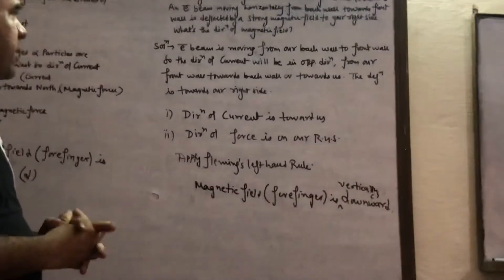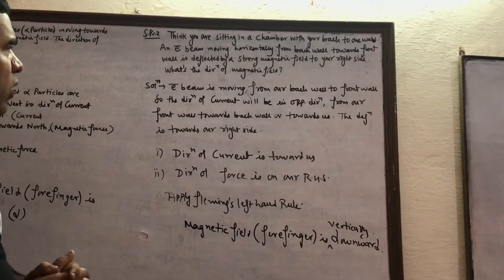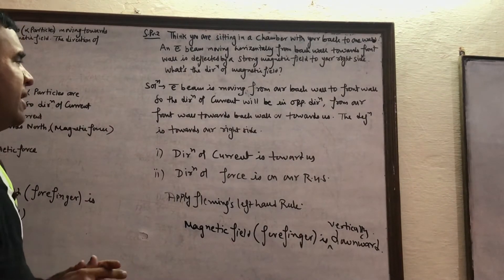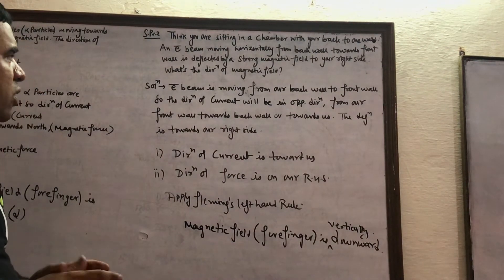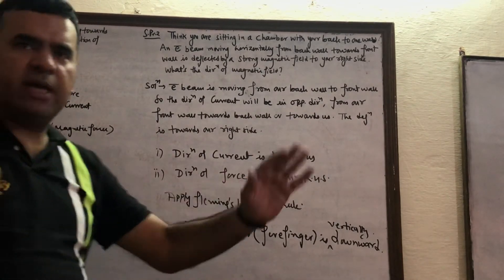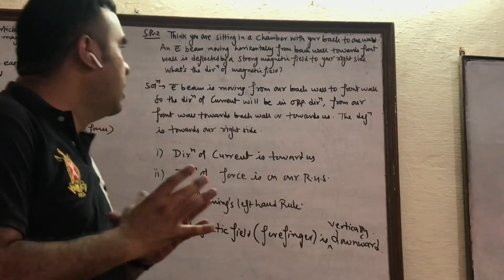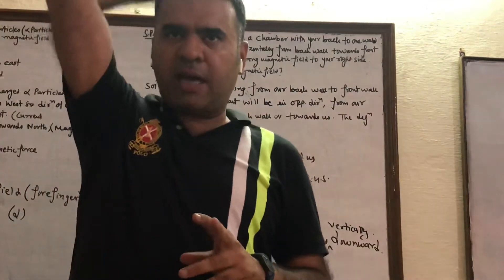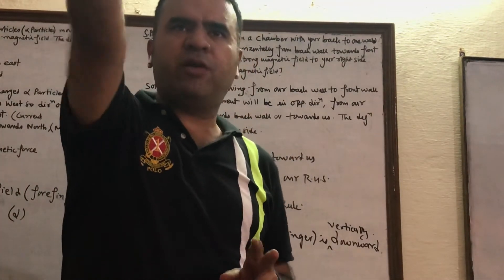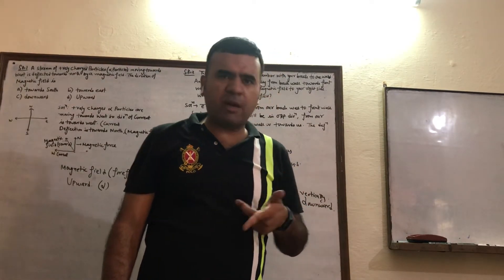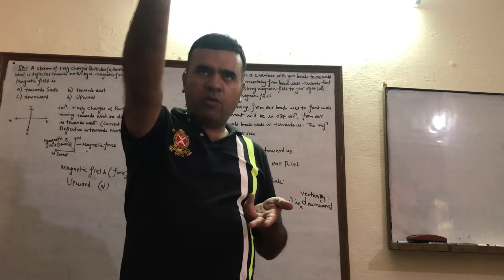Let's move to sample problem number 2. Think you are sitting in a chamber with your back to one wall. An electron beam is moving horizontally from the back wall towards the front wall and is deflected by a strong magnetic field to your right side. What is the direction of the magnetic field? Since the electron and current travel in opposite directions, the current is moving from the front towards me — that is, towards the front.